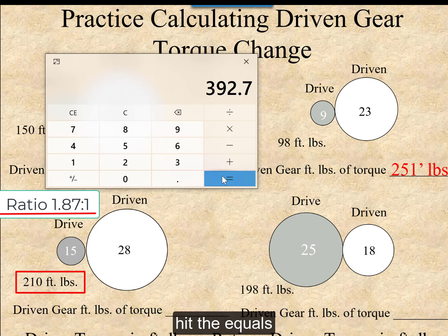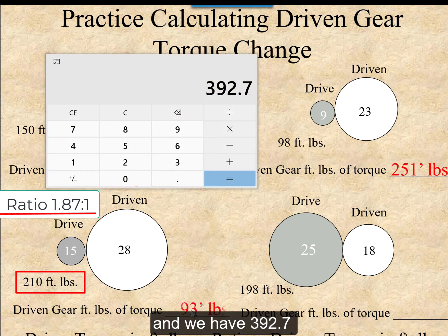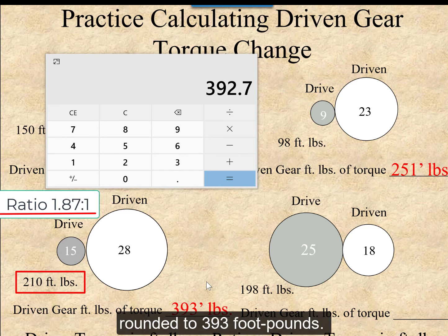Hit the equals, and we have 392.7, and that is going to be rounded to 393 foot-pounds.